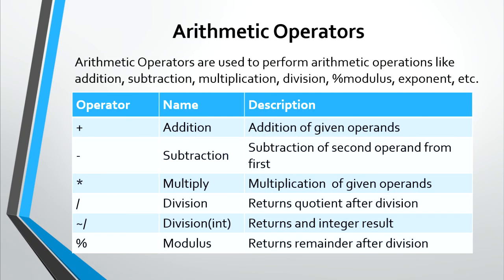Arithmetic operators are used to perform arithmetic operations like addition, subtraction, multiplication, division, modulus, exponent, etc. For addition, the operator used is the plus sign. For subtraction, it is the dash. For multiplication, it is the asterisk. For division, the operators used are slash and tilde slash — the first is regular division, and the other forces the result to become an integer. And lastly, modulus returns the remainder after division.